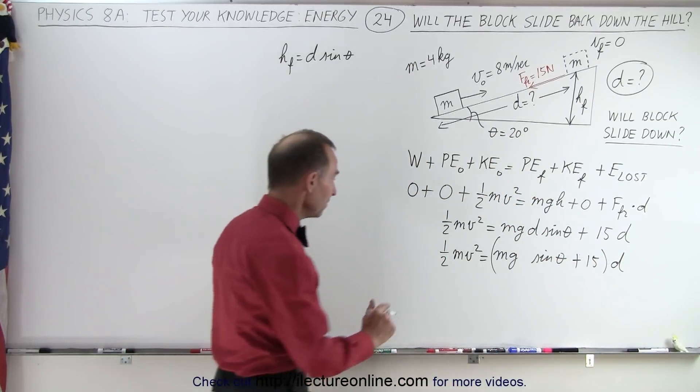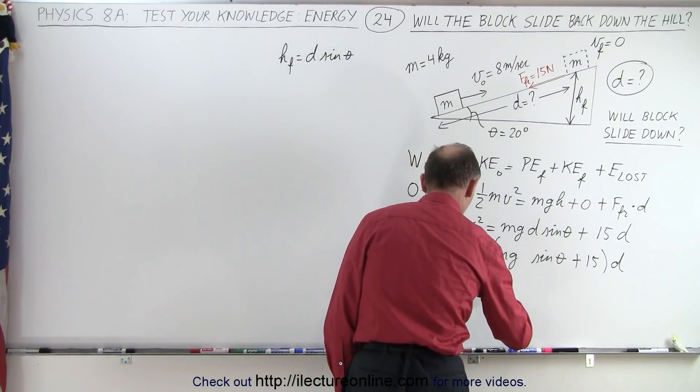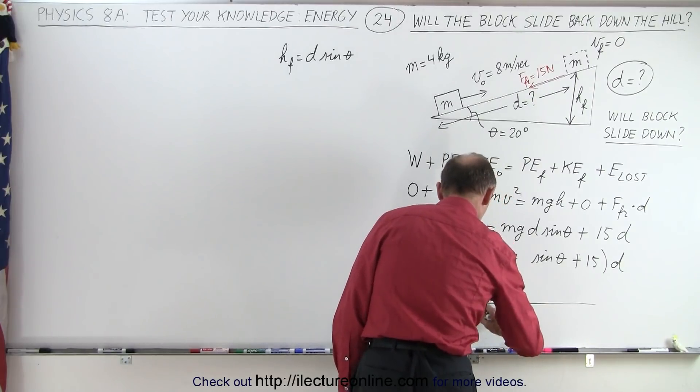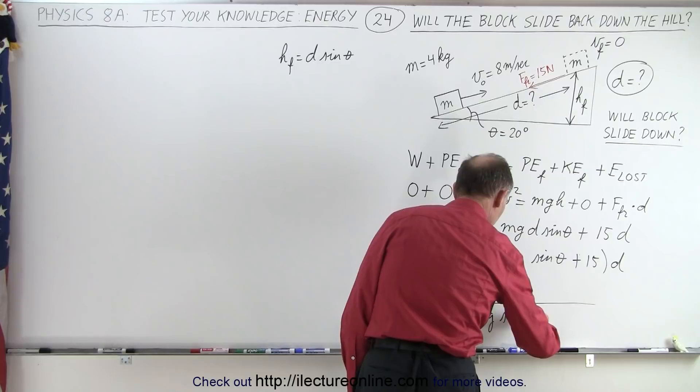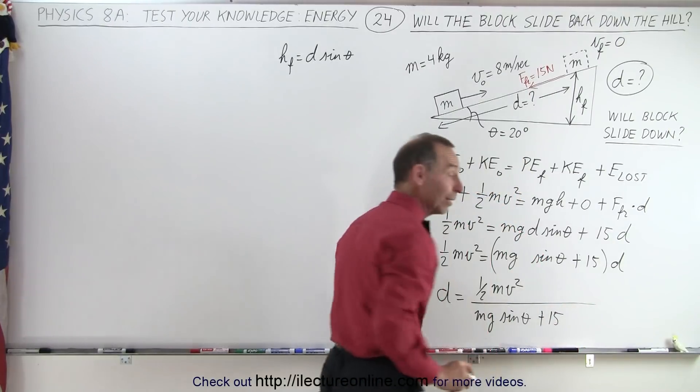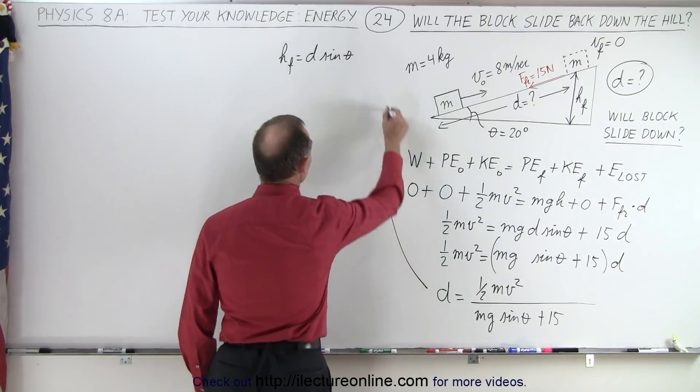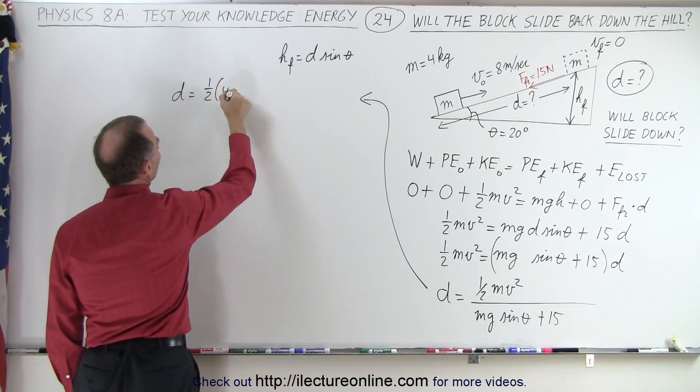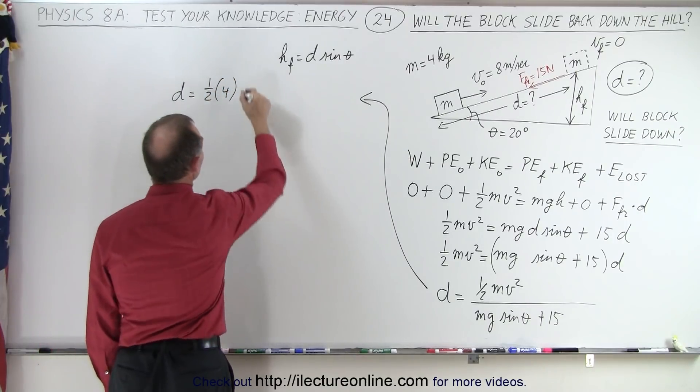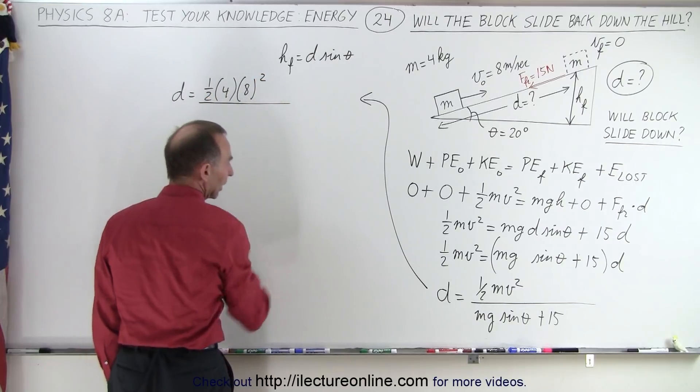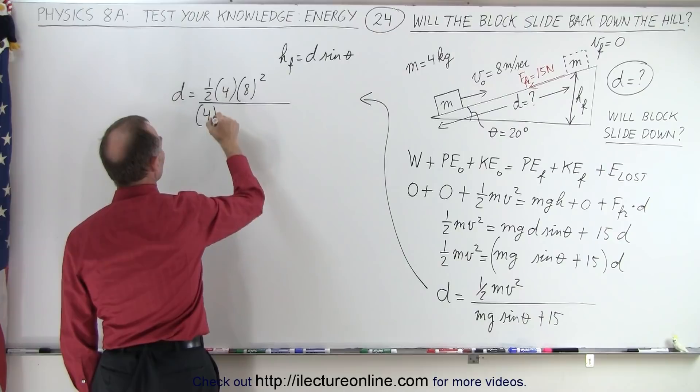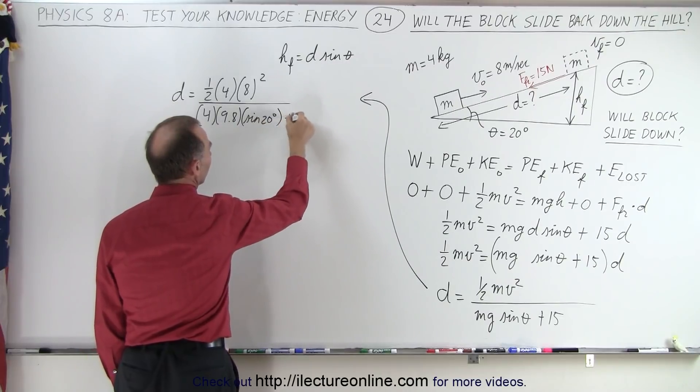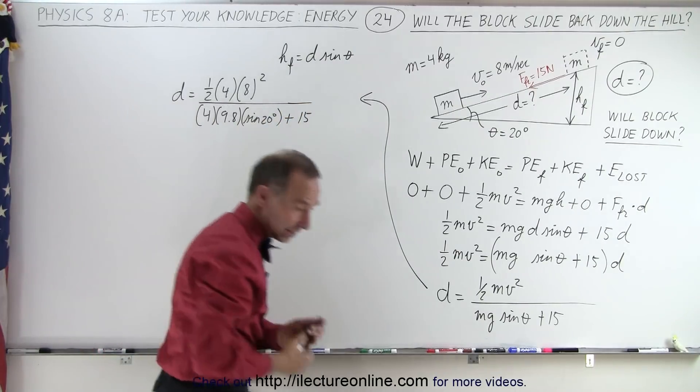Now we'll solve for d. So d is equal to one-half mv squared divided by mg sine theta plus 15. And now let's calculate what the d is. So we'll come up here, we have lots of board space. So d equals one-half times the mass which is 4 times the initial velocity squared, that would be 8 squared, divided by mg, that would be 4 times 9.8 times the sine of 20 degrees and plus 15 for the friction force.